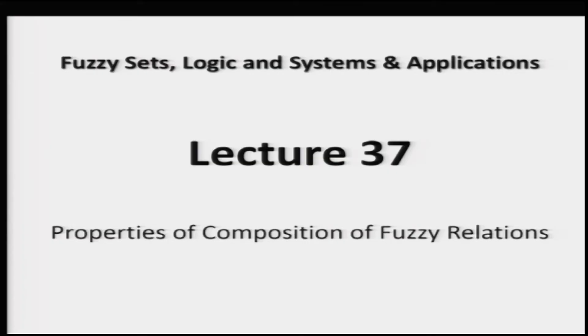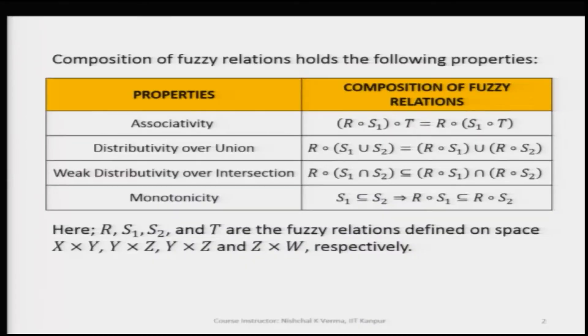Welcome to lecture number 37 of Fuzzy Sets, Logic and Systems and Applications. In this lecture, we will discuss properties of composition of fuzzy relations. The composition of fuzzy relations is based on either max-min criteria or max-product criteria. The fuzzy relations R, S1, S2, and T are defined on universes of discourse X cross Y, Y cross Z, Y cross Z, and Z cross W respectively.